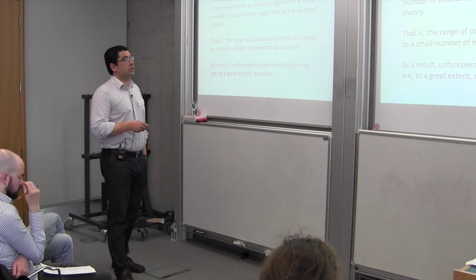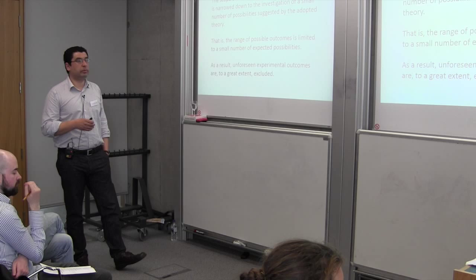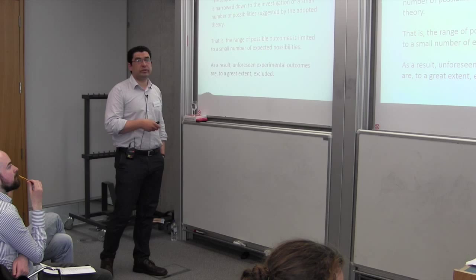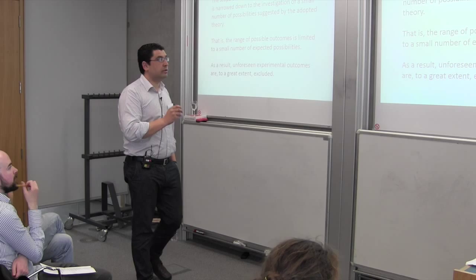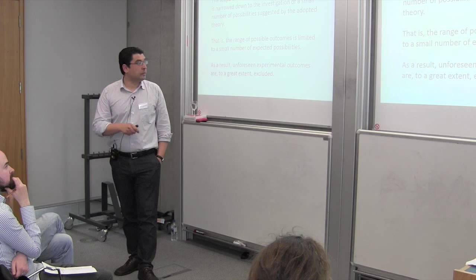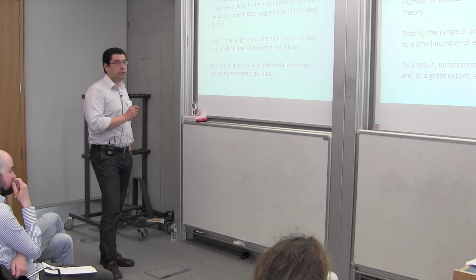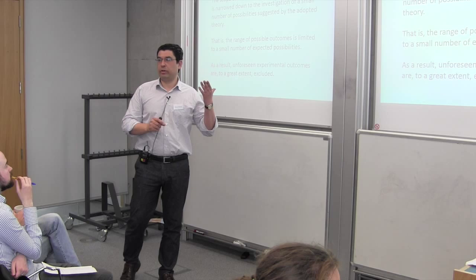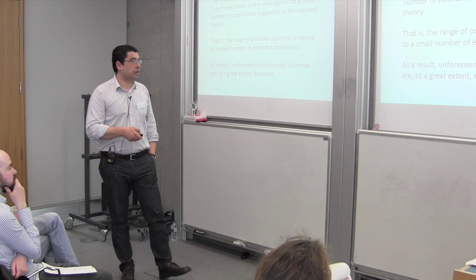Thirdly, theory-driven experimentation can be defined in terms of the range of possible outcomes. The scope of experimental inquiry is narrowed down to the investigation of a small number of possibilities, all suggested by the adopted theory or hypotheses. The range of possible outcomes is therefore limited to a small number of expected possibilities, and unforeseen experimental outcomes are, to a great extent, excluded.